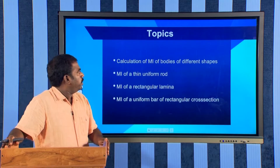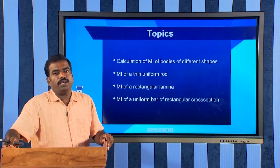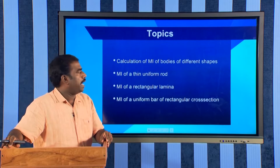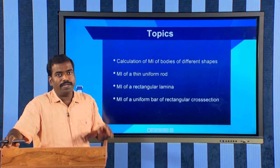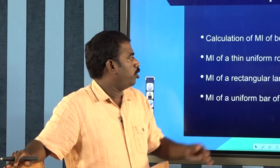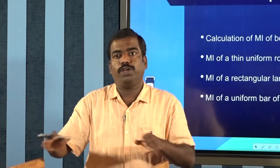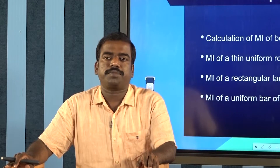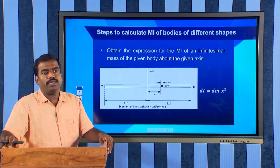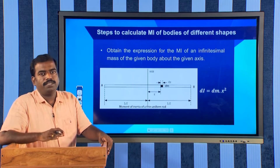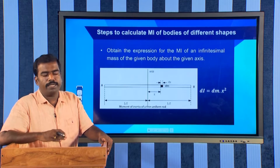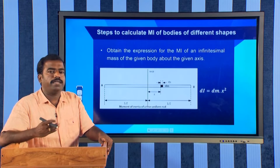This is the topic. First we will learn the important steps to calculate the moment of inertia of different bodies having different shapes. Then we will take particular shapes like the moment of inertia of a thin uniform rod, moment of inertia of a rectangular lamina, and the moment of inertia of a uniform bar of rectangular cross section.